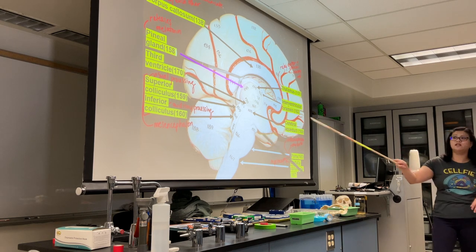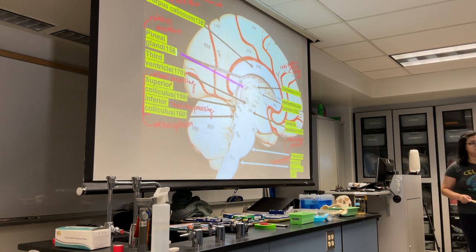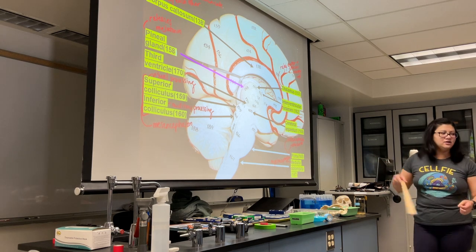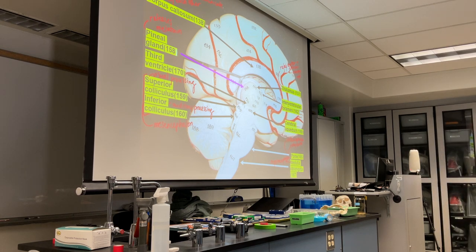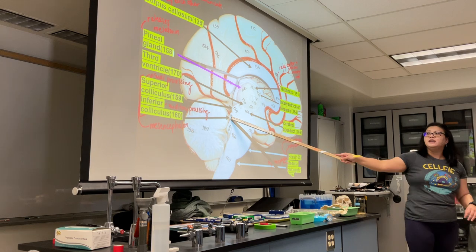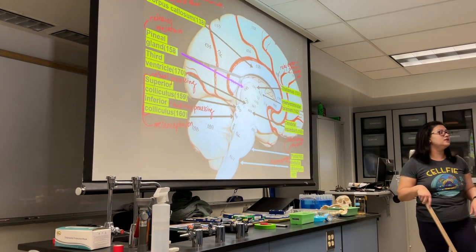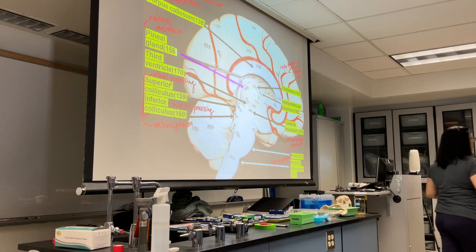Then you have the thalamus — we already talked about the epithalamus via the pineal gland. The thalamus is an incredibly important relay center for sensory information. When you look at your brain model, you'll notice structures that come out called the colliculi: the superior colliculus is really important for visual information processing, and the inferior colliculus is important for auditory processing.